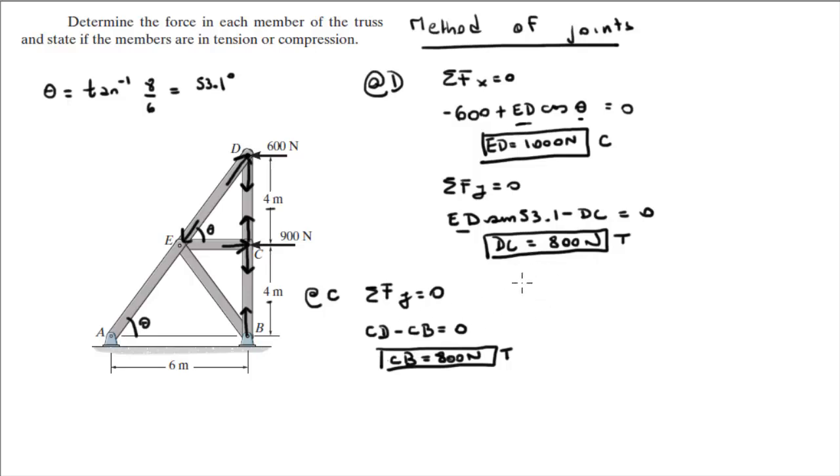Which means that CB is equal to 800 newtons. And the arrows are going towards the inside, so it is in tension. Now we can find EC just the same way. Sum of the forces in the x is equal to zero. We are also at C, so EC going to the right, minus 900 is equal to zero, so EC is equal to 900 newtons. And as you can see, it's going towards the outside, so it's in compression.